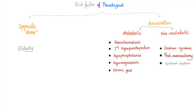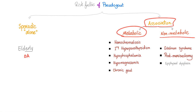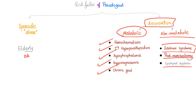Risk factors can be classified as sporadic or associated. Sporadic means it came for an unknown reason — probably the patient is old, nothing else going on. Associated includes metabolic disorders: hemochromatosis, primary hyperparathyroidism, hypophosphatemia, hypomagnesemia, chronic gout, hypothyroidism; and non-metabolic: Gitelman syndrome, post-meniscectomy, epiphyseal dysplasia. If the patient is old with pseudogout, you're done. If the patient is young, you need to go fishing for underlying causes.